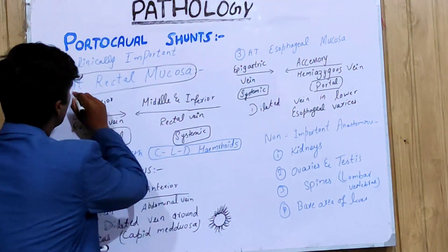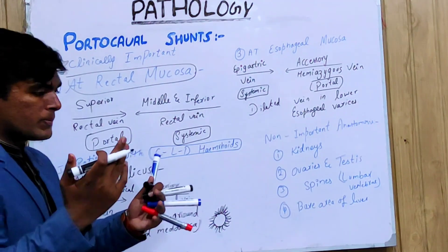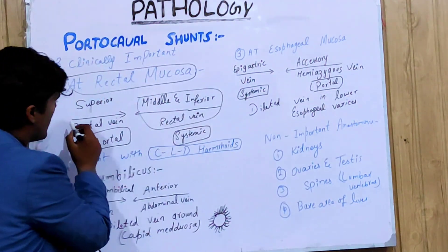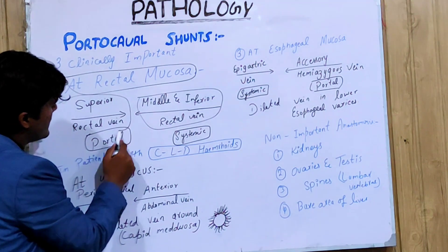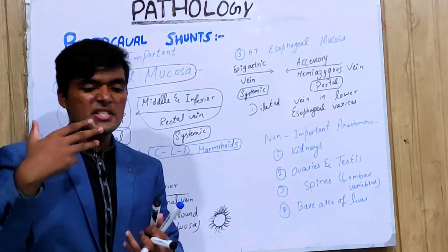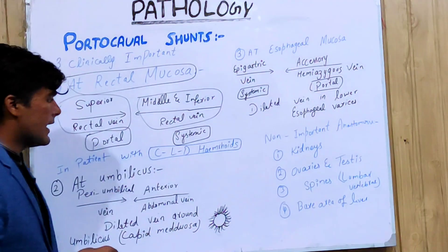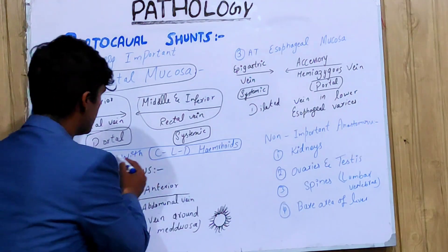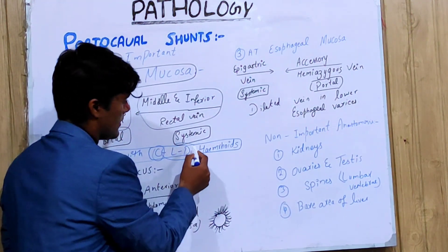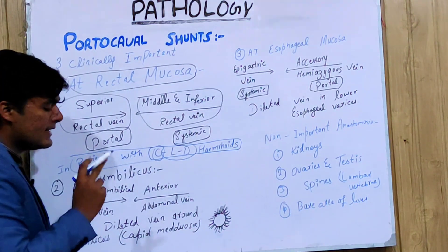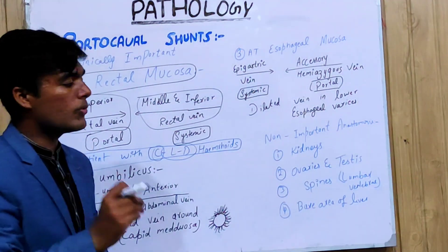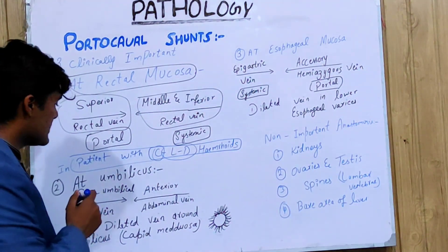Now talking about the three clinically important portocaval shunts. The first is at the rectal mucosa: from the systemic side we have the middle and inferior rectal veins, and from the portal side we have the superior rectal vein. This is a major clinical site, seen in patients with chronic liver disease and hemorrhoids.